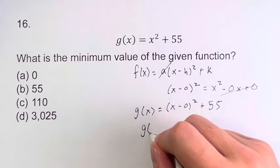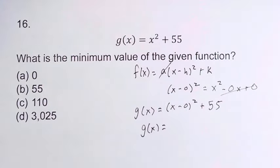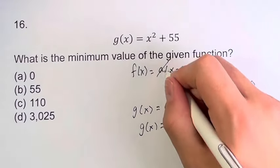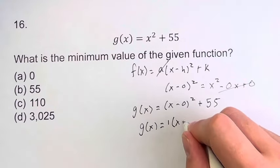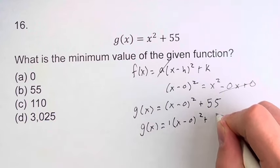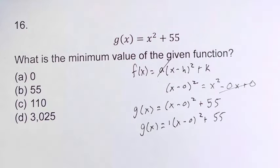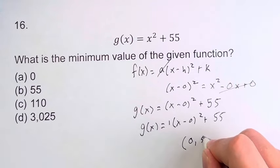Therefore, g of x is equal to 1, that a term, times x minus 0 squared plus 55. So this is the vertex form. It means that the vertex is 0, 55.